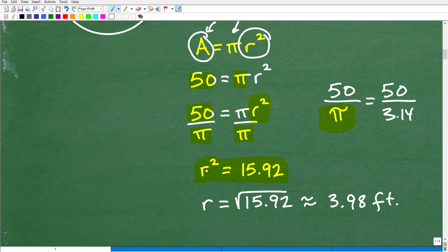So at this point, how do I solve for r? Well, you simply just go ahead and take the square root of both sides. You're going to get the square root of r squared is r. And that's going to be equal to the square root of 15.92, which will be approximately 3.98.